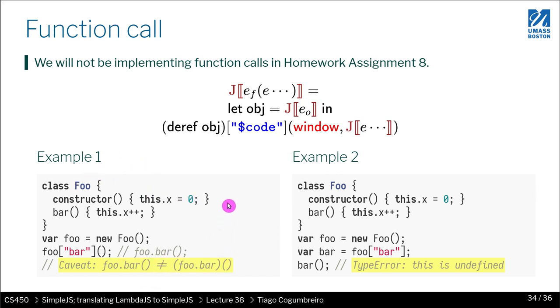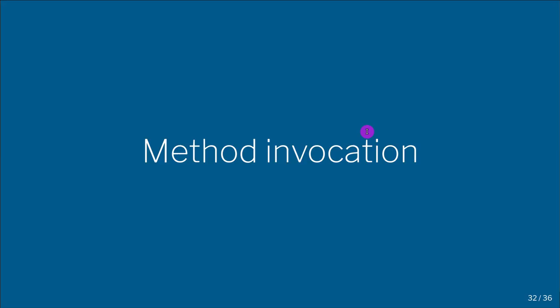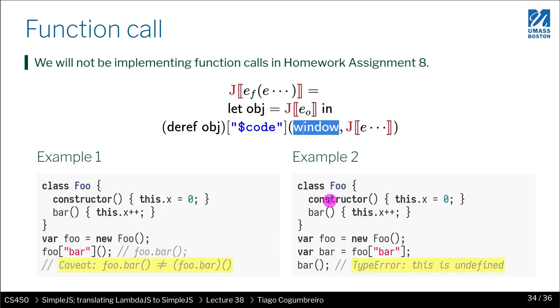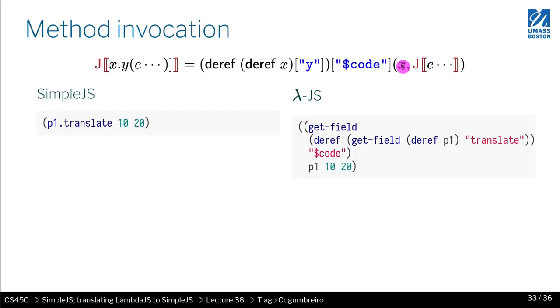One very interesting subtlety for me at least is how function calls work in JavaScript. So in JavaScript, the following code highlighted in blue is different. That is to say if you do object.bar in parentheses is different than if you do object.bar parentheses around that and then call it. Why is that? Because the language distinguishes between a method call and a function call, and looking up and doing this is a method call, it's not a function call.